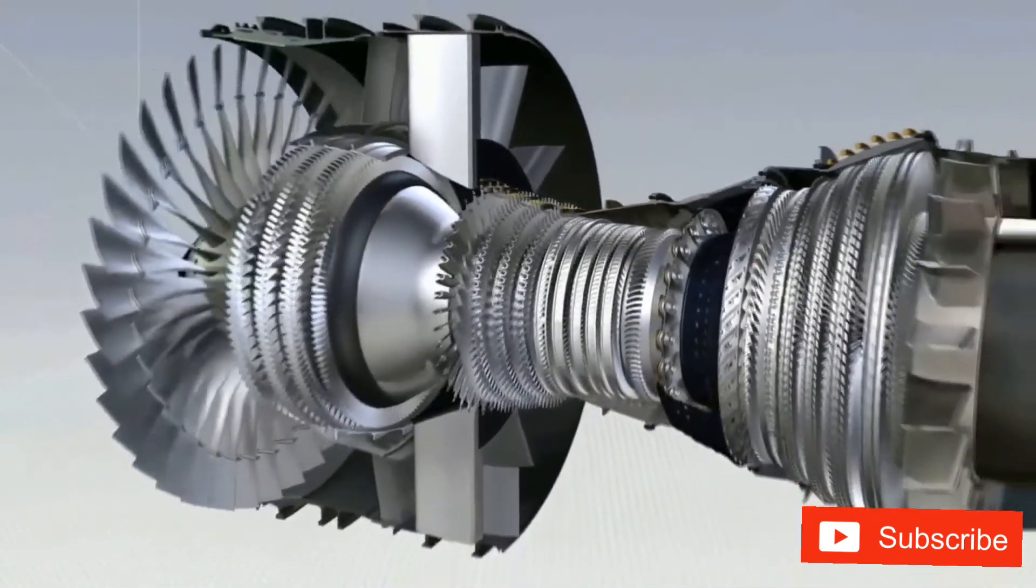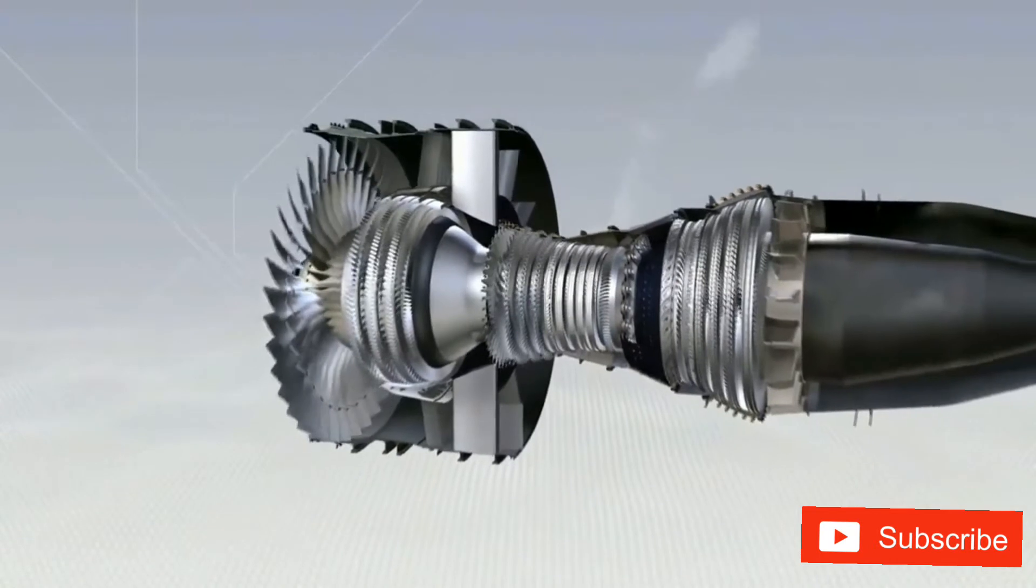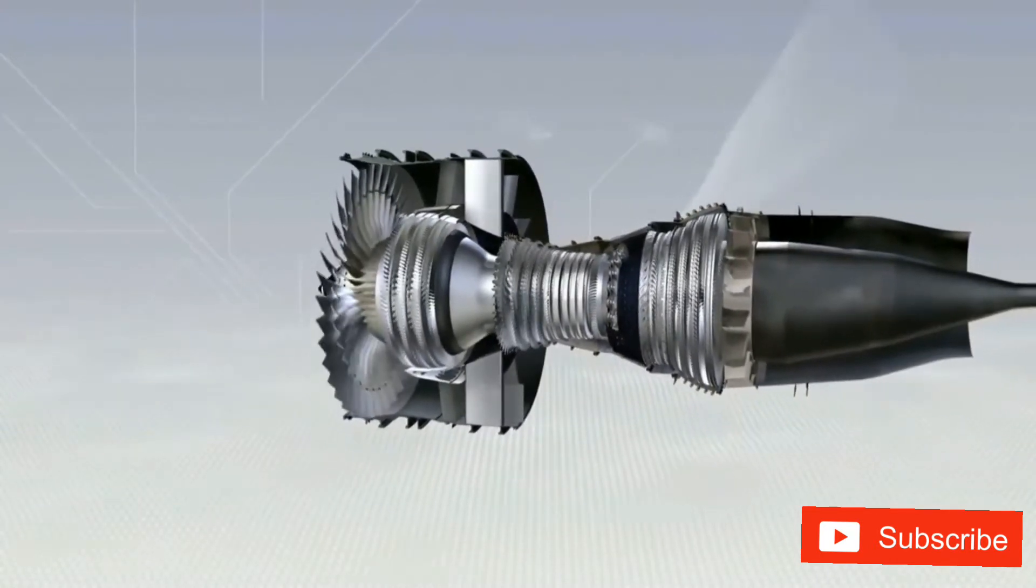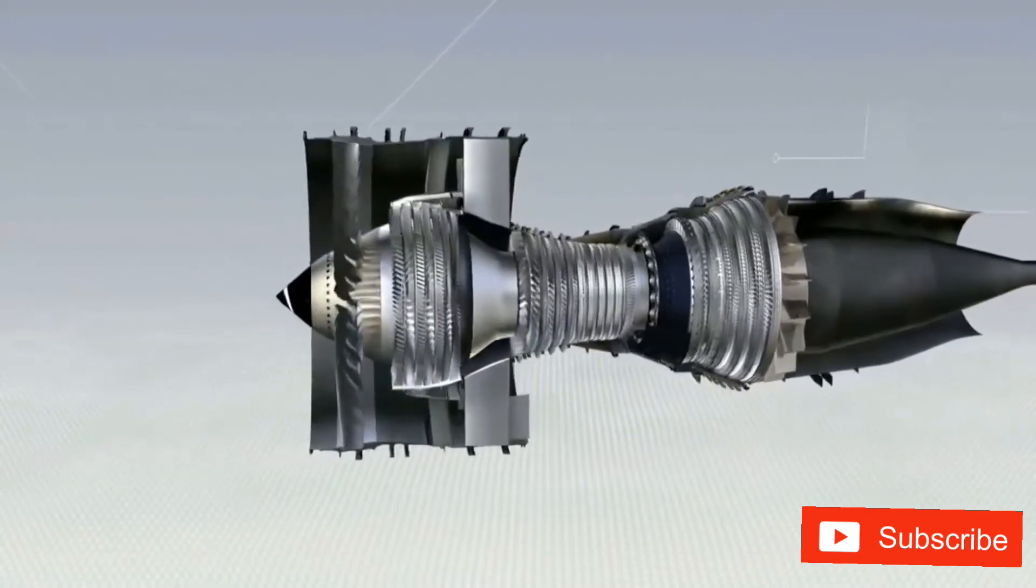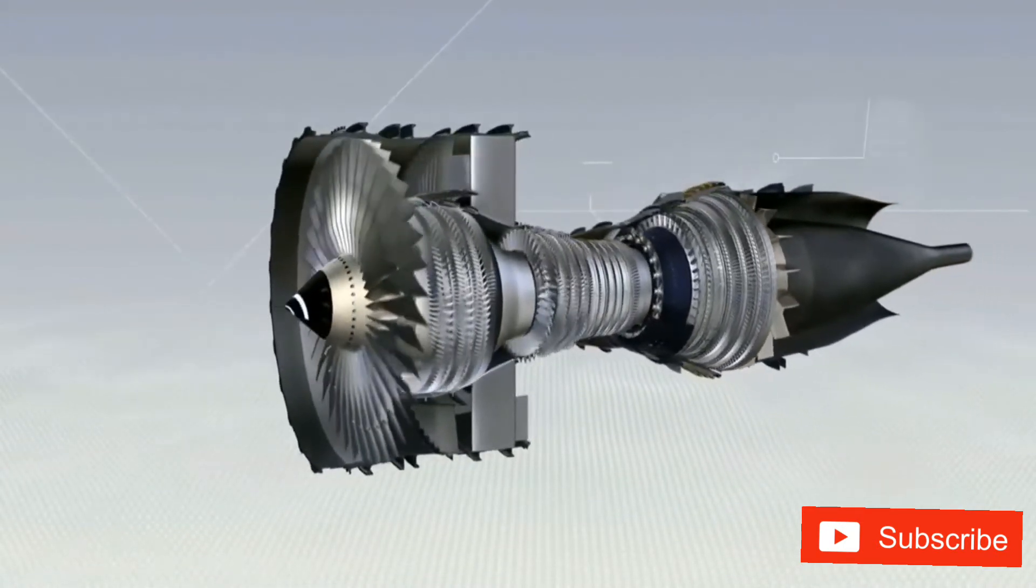A turbofan is therefore a flow cycle engine. Air is compressed, then heated by burning fuel, after which it passes through the turbines, which drive the compressors and the fan.